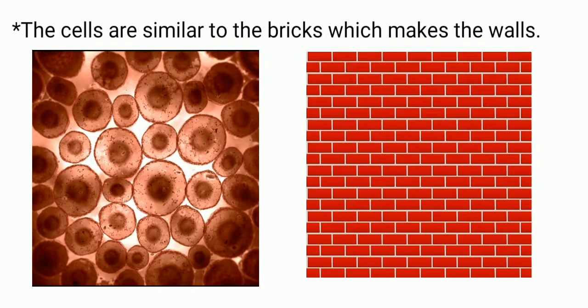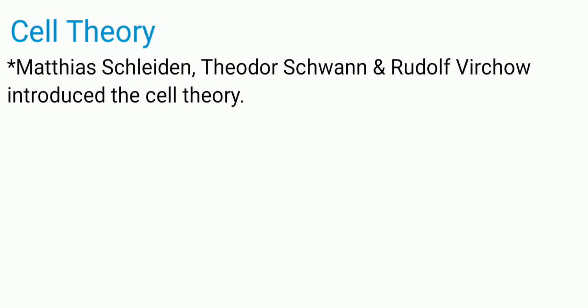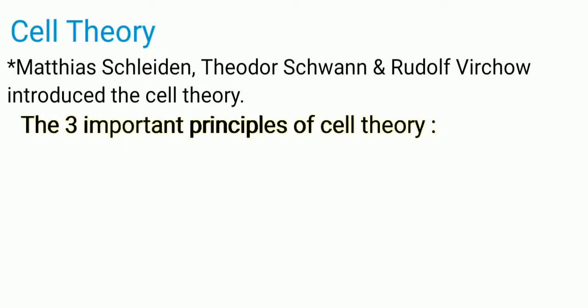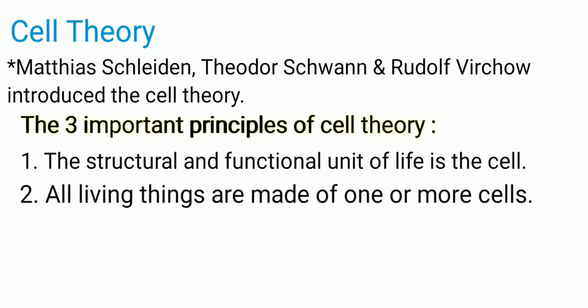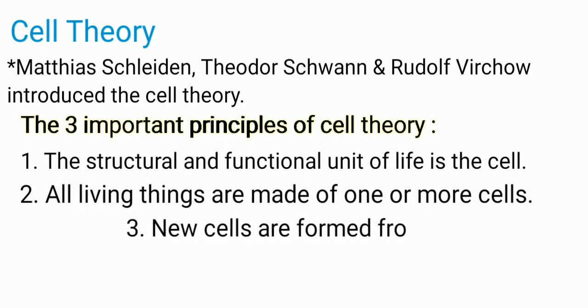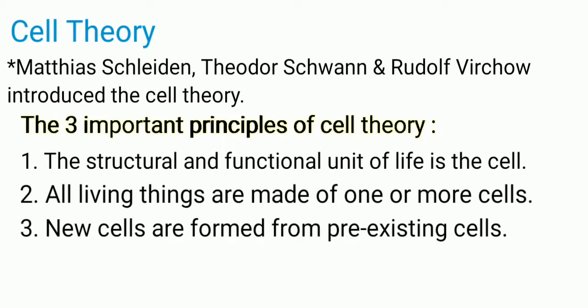There were important theories put forward by scientists. The German scientists Matthias Schleiden, Theodor Schwann, and Rudolf Virchow introduced the cell theory by observing living tissues. The cell theory consists of three important principles: the structural and functional unit of life is the cell; all living things are made of one or more cells; and new cells are formed from pre-existing cells.